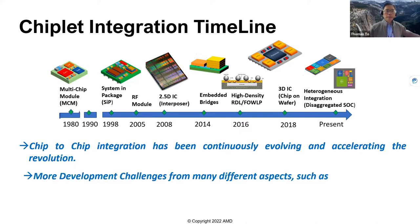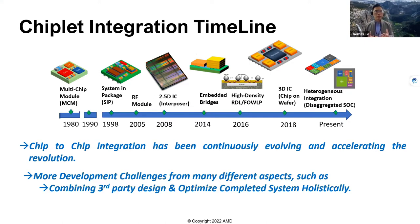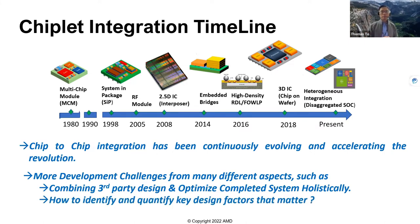This actually creates more development challenges from many angles. As I mentioned earlier, third-party design is going to be more prevalent — it's no longer vertical development. Our job is how do we integrate the system completely and holistically and successfully. If we go one step further, we will ask ourselves: how do we identify and quantify the key design factors? Of course, this will vary from system to system.